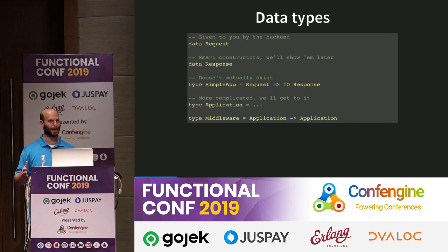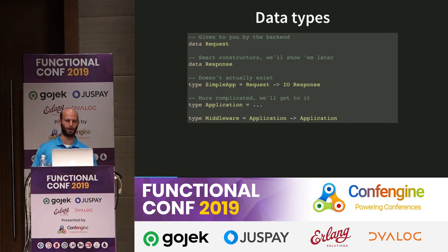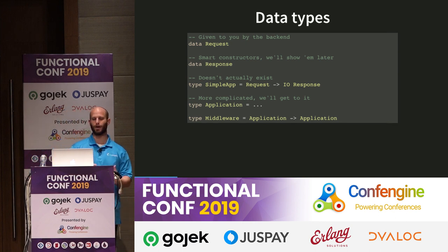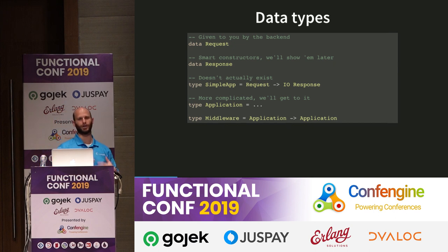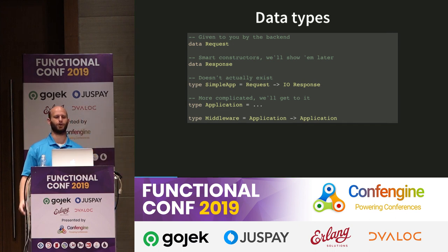This is the basics of the entire interface of WAI. We've got a data type called Request. As a user of WAI, you're never going to create this — you're going to be handed it by some kind of a backend. So Warp will parse a request and generate a Request. The testing backend will generate a Request based off of information you provide. Response is the thing you're going to make: you take the request, you do something, and you generate a response. What's included in the response? The status code, the headers, and the body.